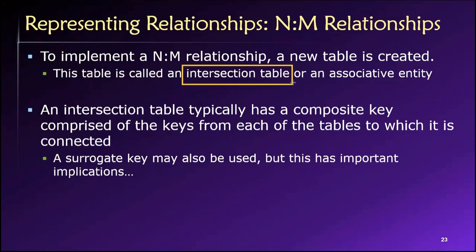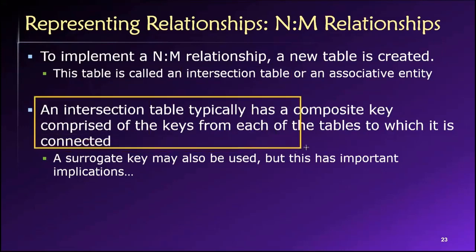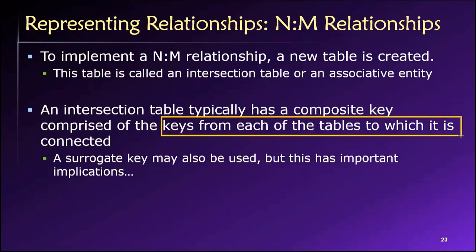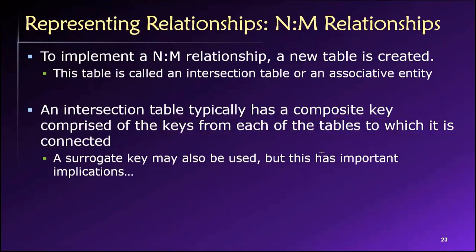Note that some people, including me from time to time, will refer to an intersection table as a lookup table, because that's its purpose — it's just there to keep track of the relationships, to allow us to look up how the connections between the associated tables are linked together. An intersection table typically has a composite primary key, and that composite key will consist of the primary keys from each of the parent tables to which it is connected.